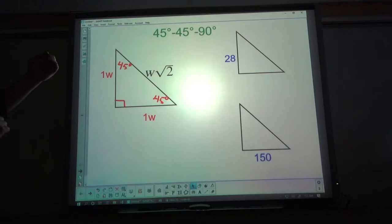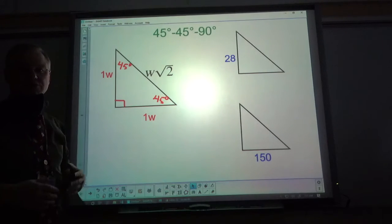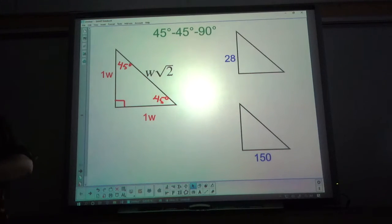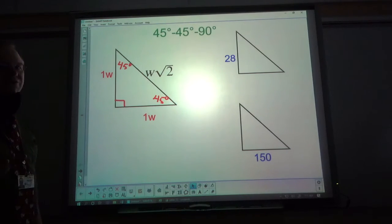All right, so if we say 45-45-90 and one w, one w, w square root of two, those are the sides. Now I could go into why it's one, one and square root of two, but I think we are better off if we just focus on how to find the other sides and not what the background is behind it. If you have questions on that, ask me in class.